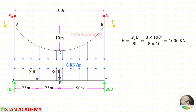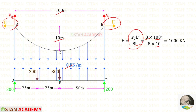Now in the cable, let us find the horizontal reaction H. The formula is WE L squared upon 8H. WE is 8, L is 100, and dip H is 10. For H we will get 1000 kilonewton.